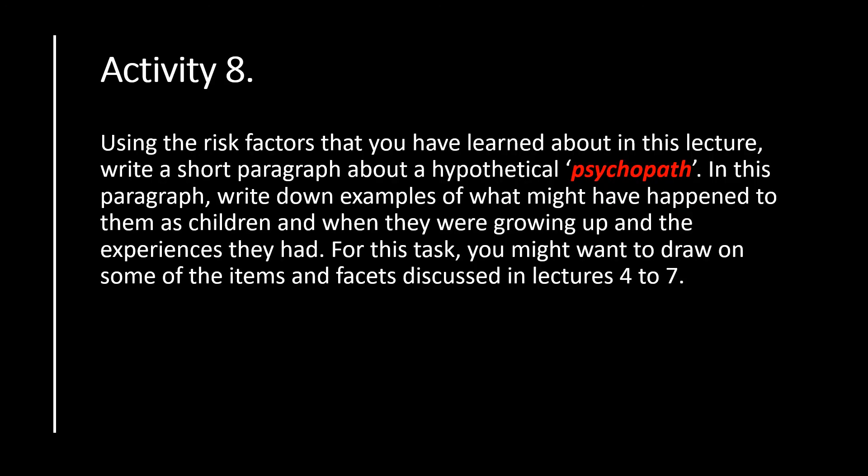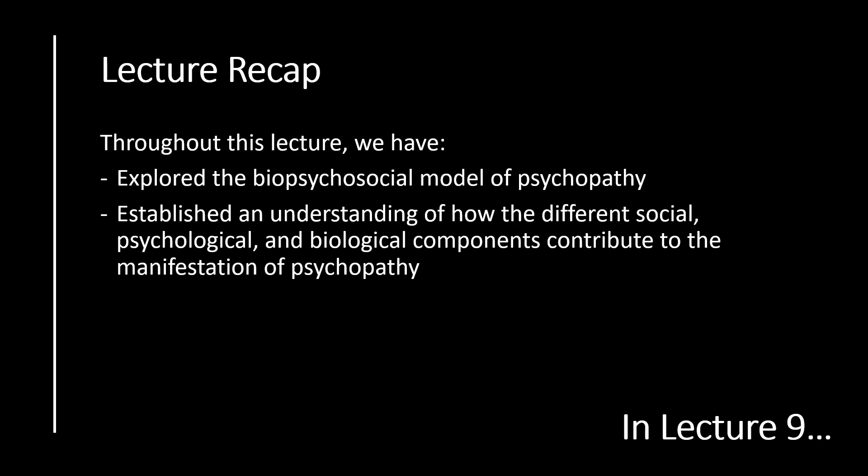For activity 8, we want you to use the risk factors learnt about within this lecture — the biological mechanisms, psychological mechanisms and social factors — and write a short paragraph about a hypothetical psychopath, including examples of what might have happened to them as a child and when they were growing up. You may want to draw on items and facets discussed in lectures 4 to 7, and you should spend between 10 and 20 minutes on this task. This brings us to the end of lecture 8, in which we have explored the biopsychosocial model of psychopathy and established how different social, psychological and biological components might contribute to the manifestation of psychopathy, as well as potential protective factors. In lecture 9 we will move on to talk about the concept of the successful psychopath.